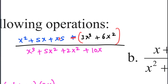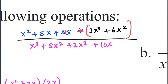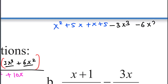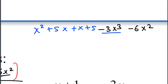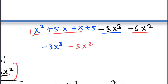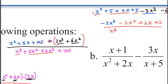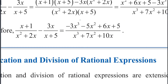This is a part: x squared plus 5x plus x plus 5, minus 3x cubed minus 6x squared minus 6x squared. So x squared minus 6x squared minus x squared, giving negative 3x squared. And 7x squared plus 10x is equal to R.